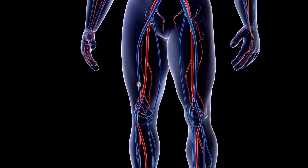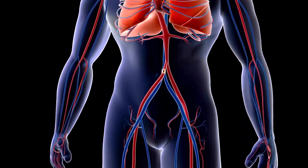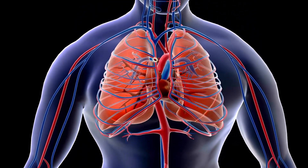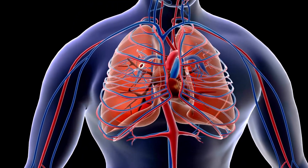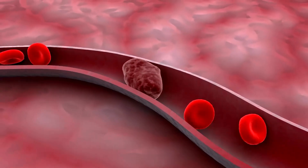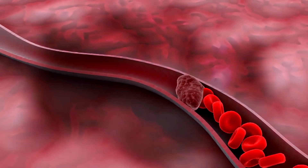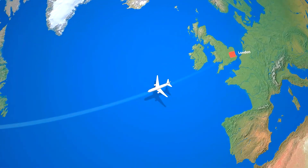A pulmonary embolism happens when a blood clot travels from another part of the body — usually the legs — all the way to the lungs and lodges there. This can block blood flow, and if it is large enough it can even lead to sudden death. To reduce your risk of pulmonary embolism, number one: stay active.